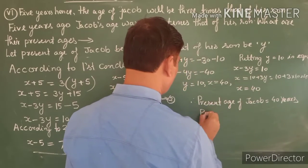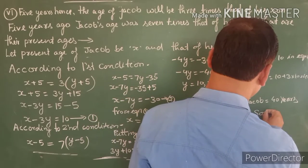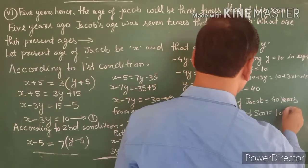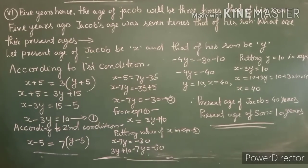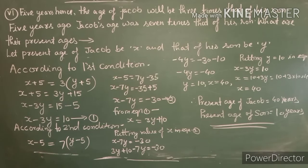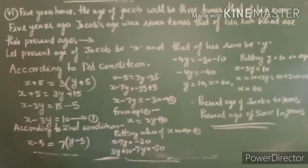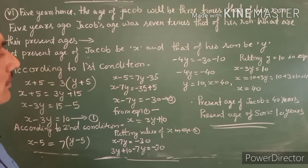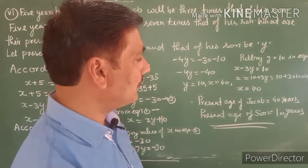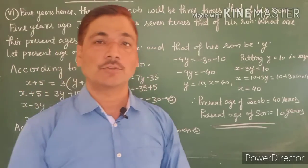The present age of Jacob is 40 years and the present age of his son is 10 years. Let's check the answer: five years hence, son's age is 15 and father's age is 45 — 45 divided by 15 is 3 times. Five years ago, son's age is 5 and father's age is 35 — 35 divided by 5 is 7 times. The answer is correct. Thank you, we'll see you in the next video.